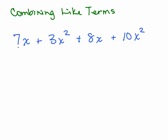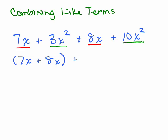That means the variable part is exactly the same. So in the first term we have a 7x — is there anything else that has exactly the same variable part? This is an x, this is an x squared, that's different. But over here I have an 8x, so these are exactly the same. I also have a 3x squared — I see if there's another x squared term, and here we are. So I'm looking for something that has the same variable part, and I can combine those together as well.